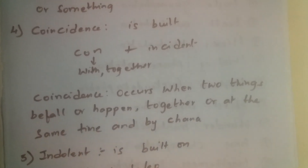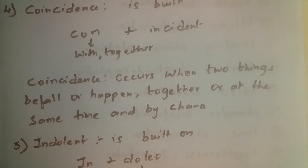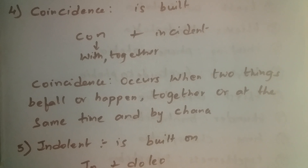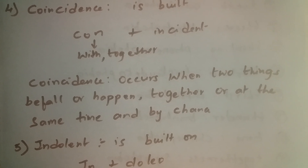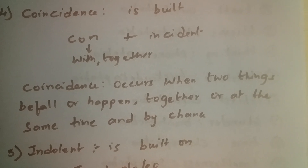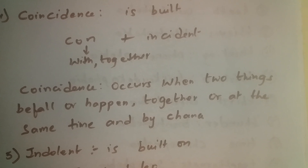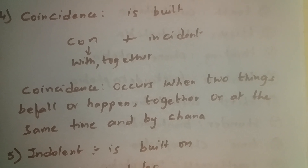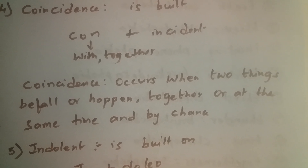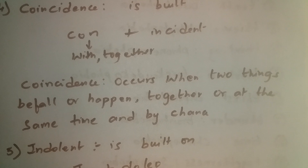Coincident is built on 'con' plus 'incident,' and 'con' takes the form of 'co' when it is a prefix before a word which starts with 'i.' So coincidence is something which happens when two things befall or happen together at the same time and by chance.